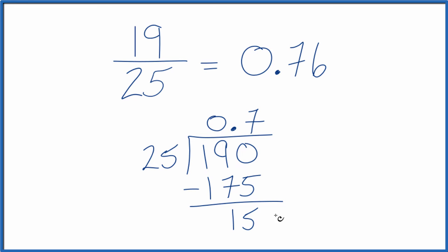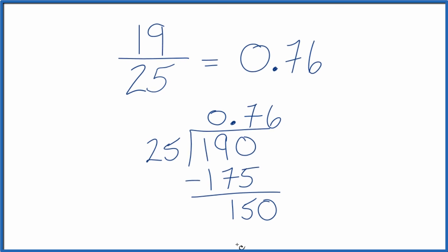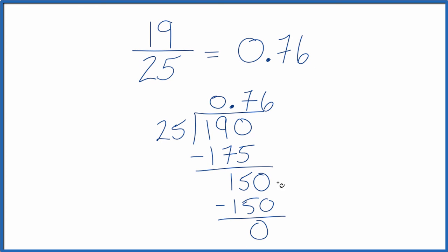25 doesn't go into 15. Call it 150. We move over 1. 6 times 25, that gives us 150. Subtract. We don't have any remainder.